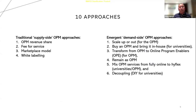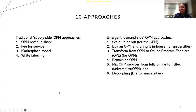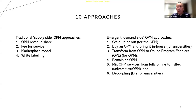We came up with 10 approaches for OPM and university relationships or partnerships — this is one of the first major chapters of the book. Looking at the supply side of OPM approaches: the traditional OPM revenue model is between university and OPM, where revenue generated from the online program is shared between them — this could cover business development, program development, marketing, recruitment, student support, and technological infrastructure.